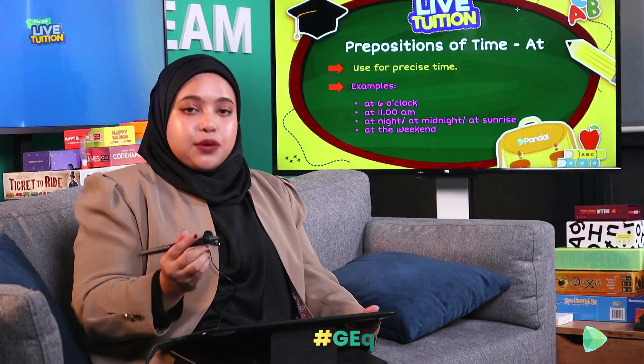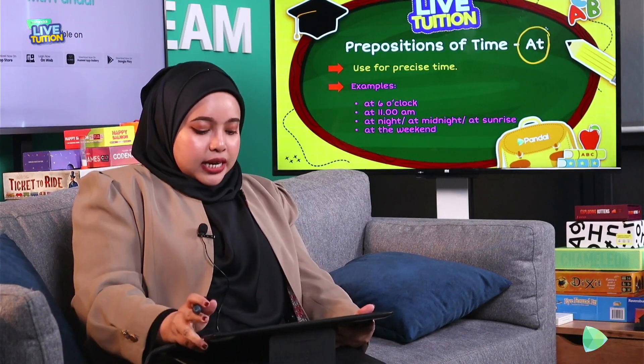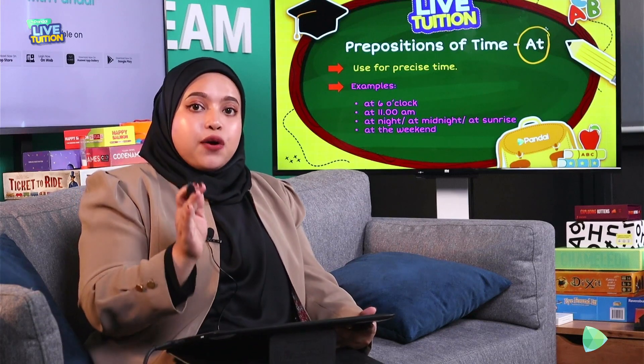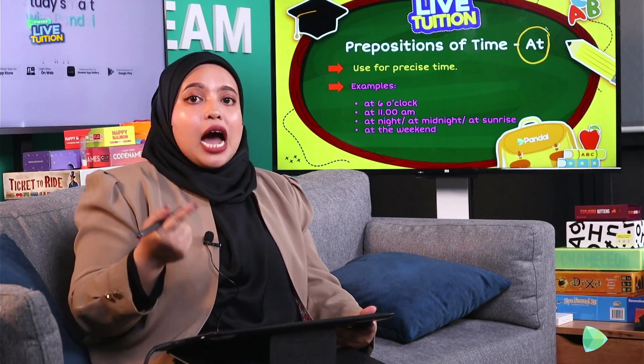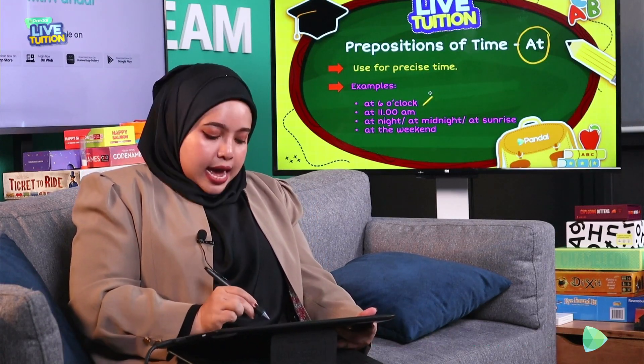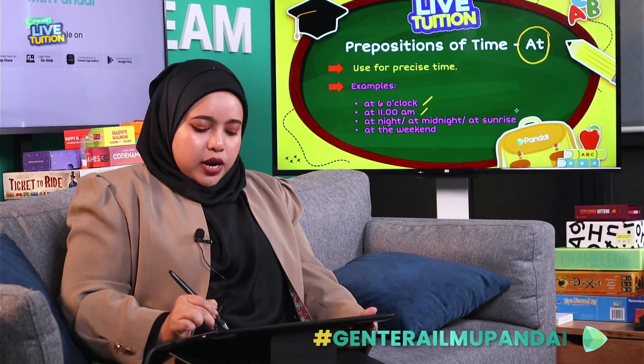For preposition of time today, we are going to see about 'AT'. 'AT' is used for precise time, especially when you talk about hours — masa, pukul berapa. For example: at six o'clock, at eleven a.m., at night, at midnight, at sunrise.